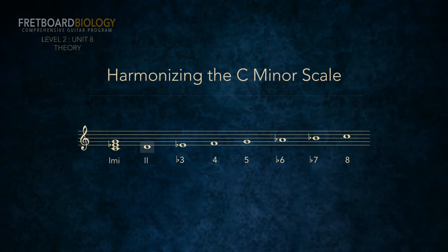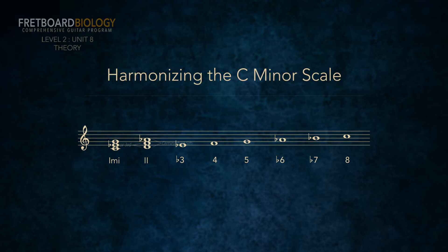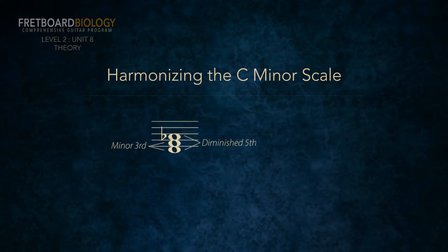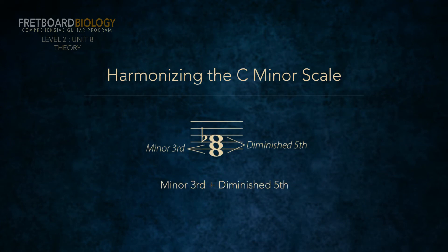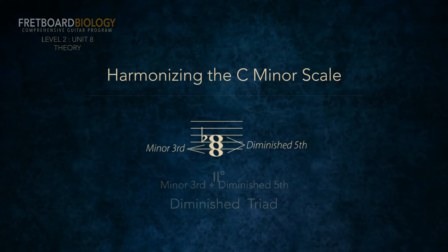Let's do the two chord. We start with the second scale degree, which is D. We find a note a third above D, and it has to be from the key we're in, which is C minor. That note is an F, and we call this the third of the triad. Next we find a note a fifth above D, and it also has to be from the C natural minor scale. That note is an A flat, and we call this the fifth of the triad. So F is a minor third above D, and A flat is a diminished fifth above D. A triad with a minor third and a diminished fifth is a diminished triad. Conclusion: the two chord is diminished, and we label it two with a little circle for diminished.